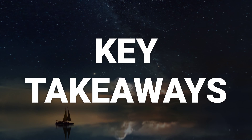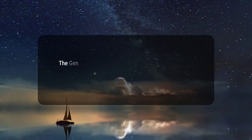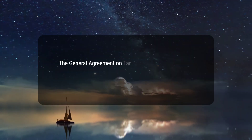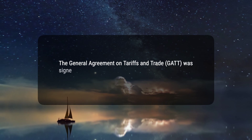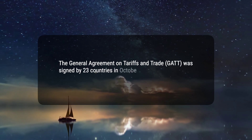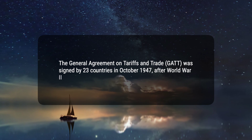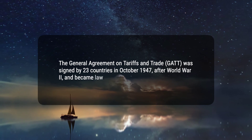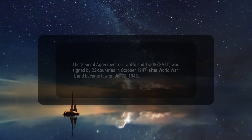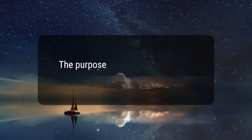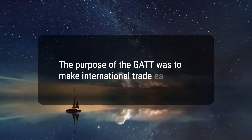Here are four key takeaways. One, the General Agreement on Tariffs and Trade, GATT, was signed by 23 countries in October 1947, after World War II, and became law on January 1, 1948. Two, the purpose of the GATT was to make international trade easier.